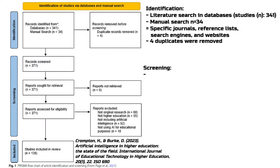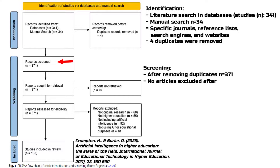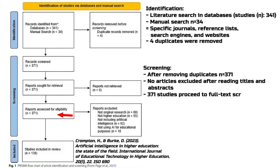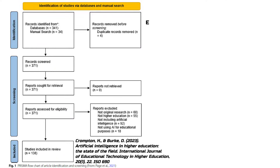Screening: after removing duplicates, 371 articles remained. After reviewing the titles and abstracts, no articles were excluded, so all 371 proceeded to the full-text screening. Eligibility: the remaining articles were read in full and then assessed.